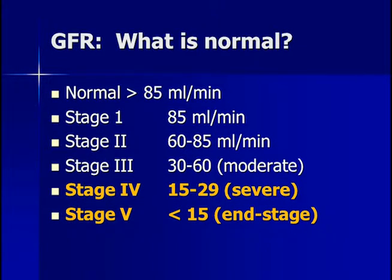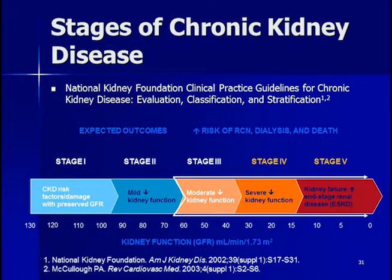Normal GFR is over 85 mL per minute. We don't typically worry about patients with creatinine clearance over 60. Moderate disease is 30 to 60 mL per minute, severe disease is 15 to 29 mL per minute, and end-stage or dialysis is less than 15 mL per minute. The National Kidney Foundation clinical practice guidelines for chronic kidney disease are similar, and we are most interested in patients with stage 3, 4, and 5 disease. Kidney function is measured in mL per minute assuming a 1.73 m² body surface area.